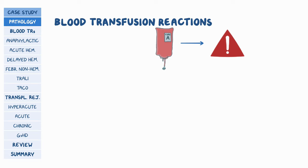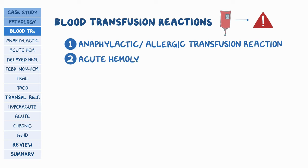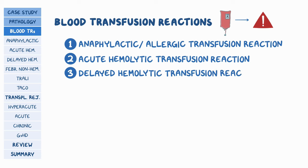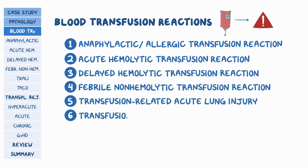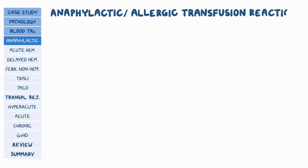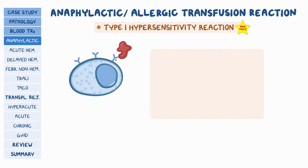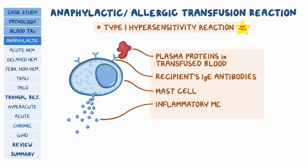Let's start with blood transfusion reactions. For your tests, there are six blood transfusion reactions to be aware of: anaphylactic or allergic transfusion reaction, acute hemolytic transfusion reaction, delayed hemolytic transfusion reaction, febrile non-hemolytic transfusion reaction, transfusion-related acute lung injury, and transfusion-associated circulatory overload. The anaphylactic or allergic transfusion reaction is a type 1 hypersensitivity reaction mediated by the recipient's IgE antibodies against plasma proteins like immunoglobulins found in transfused blood. The proteins in the donor's plasma are recognized by preformed IgE immunoglobulins on the surface of mast cells, which release their granules containing inflammatory mediators such as histamine.